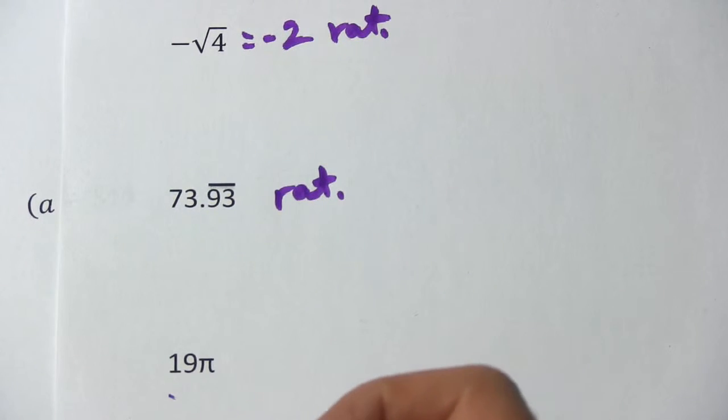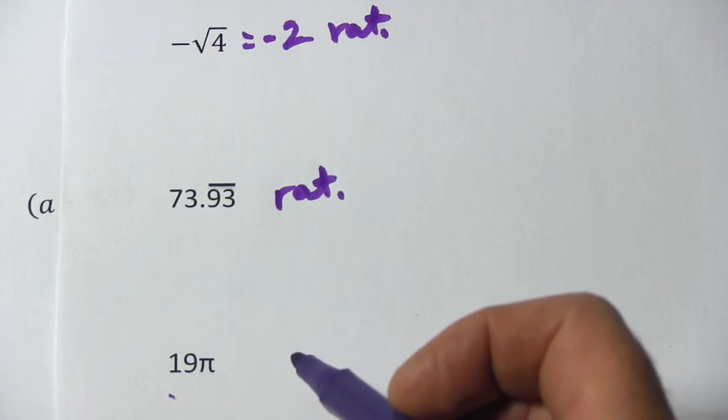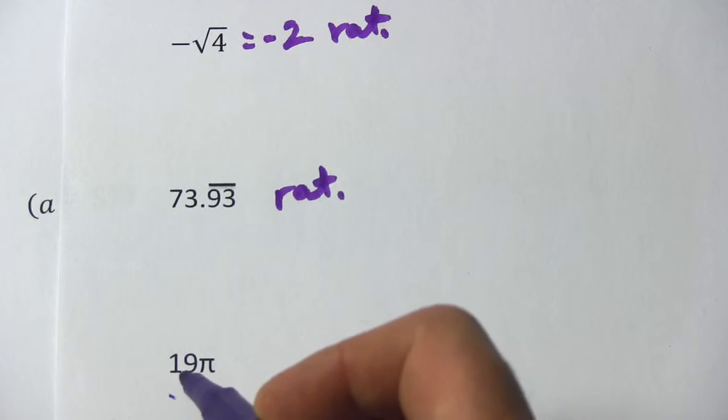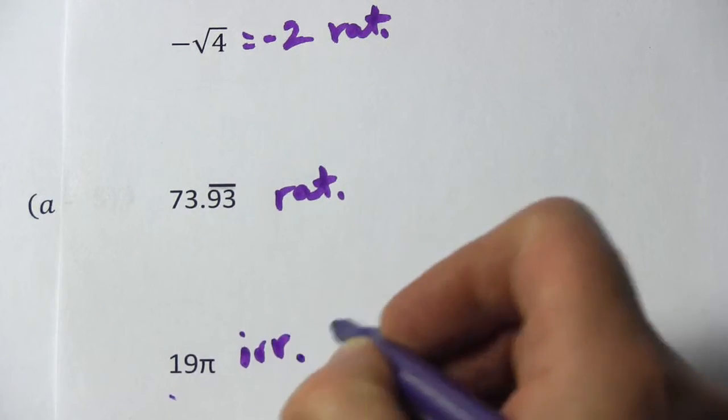Alright, next we have 19π. I mentioned that pi is one of those that has that non-repeating decimal that goes on forever. Multiplying pi by 19 doesn't change that fact. So this is an irrational number.